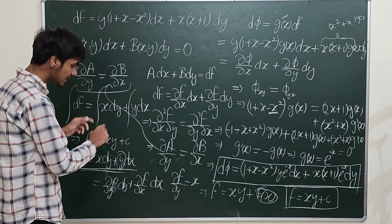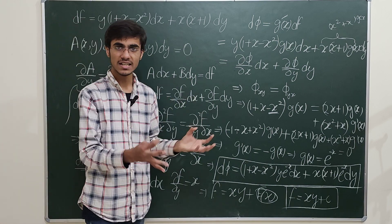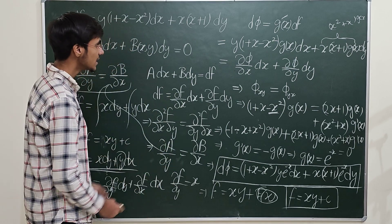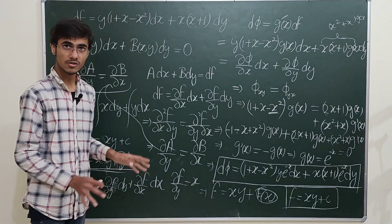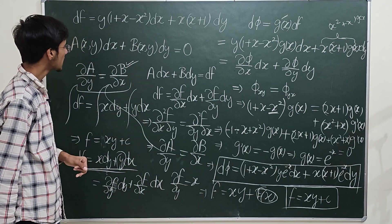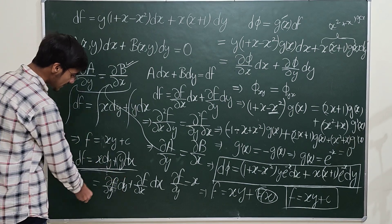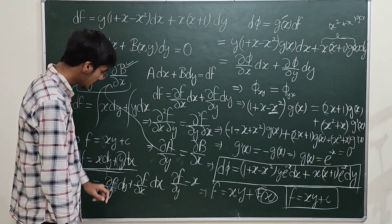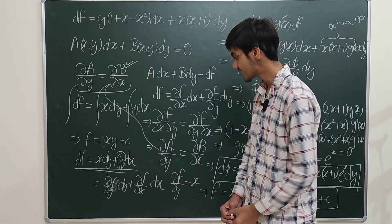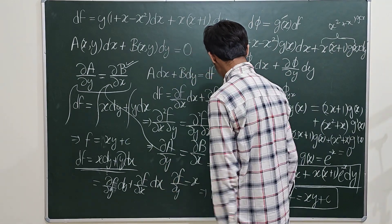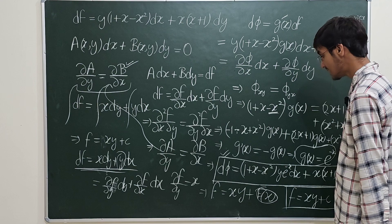An inexact differential cannot be directly integrated. You can verify it is inexact by the cross-partial test, confirming that no function f exists whose differential it is. Because no such function exists, the partial derivative cannot exist either.